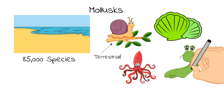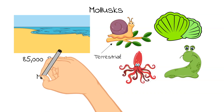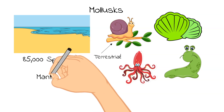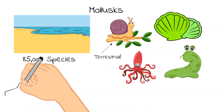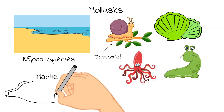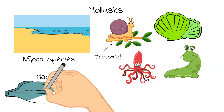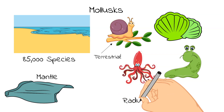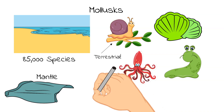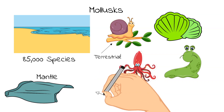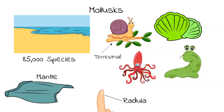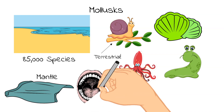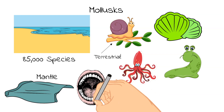There are three main things that define a mollusk. They must have a mantle, which is a cavity that is used for breathing and excretion. They also must have a radula — a structure kind of like our tongue, but it is toothed and is actually used for cutting and chewing before the food goes down into their esophagus. The third thing that all mollusks must have is a nervous system.